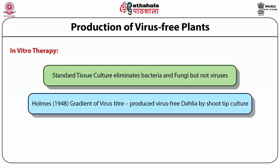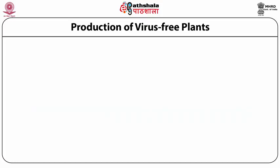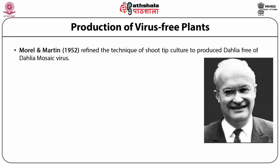Holmes, in 1948, based on the observation that in plants infected by a virus there is a gradient of virus titer which reduces as you progress towards the tip of the shoot, was able to produce Dahlia by culturing the shoot tips. This technique of shoot tip culture was further standardized for virus elimination by Morrill and Martin in 1952, who also worked on Dahlia plants.